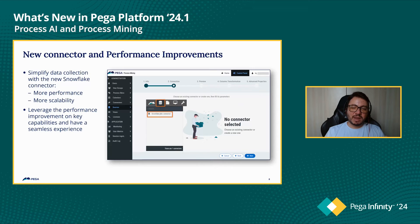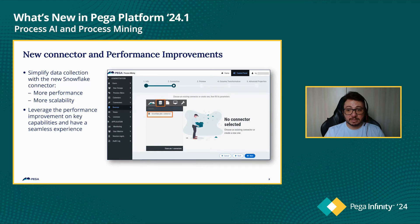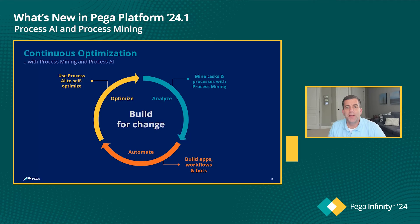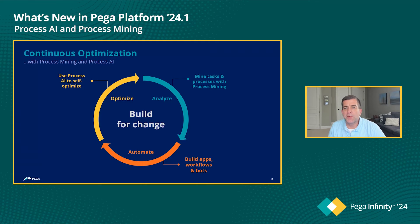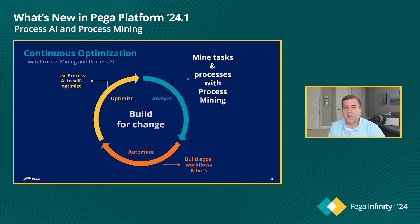Pega Process Mining is an awesome tool and gives us a world of possibilities. But a common question that comes to mind whenever we find a problem or a possibility of improvement is: what to do next? How can I take action now? That is exactly where Process AI can help. Process Mining and Process AI are both part of a closed-loop continuous optimization system built on top of the Pega platform. Organizations use Process Mining to find problems, like a high amount of reworks they didn't know existed, and use Process AI to inject real-time knowledge into any case to improve their outcomes.